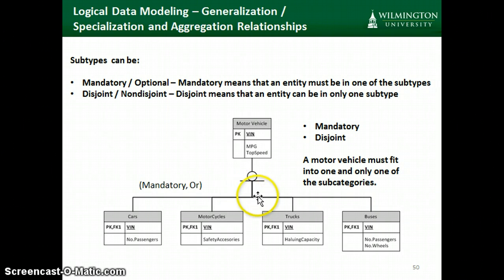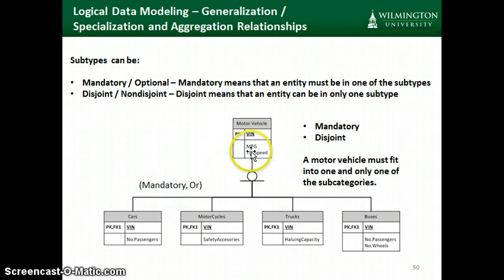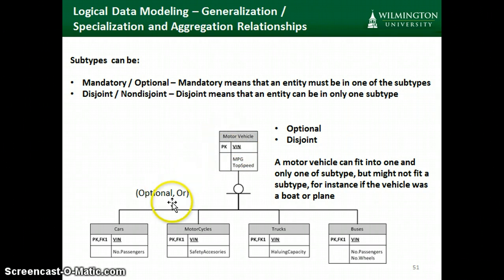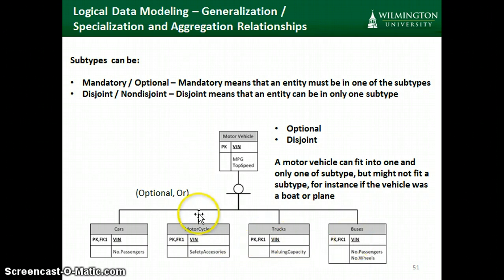In this particular example, the motor vehicle is set up so that it has to be a car, a motorcycle, a truck, or a bus — and it can't be both. That's what the 'or' means. So mandatory says anything in the motor vehicle entity has to be in one of these subtypes, and it can only be in one. The final possibility is a motor vehicle that doesn't have to fit into one of the subtypes — for instance, it could be a boat or a plane — but any motor vehicle in this setup can only be in one of the subtypes. It might not be in a subtype at all; that's the optional part. But if it is in a subtype, it can only be in one or the other, not multiple subtypes.